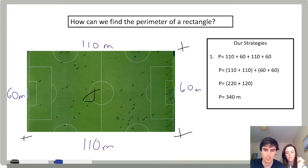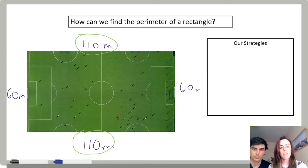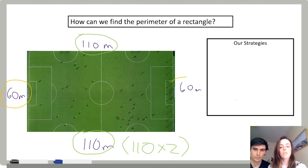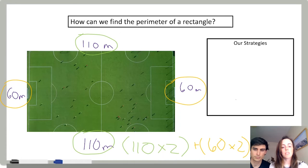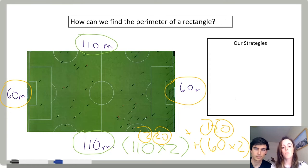My partner Lee had a different strategy, so she's going to share that — maybe you have a totally different strategy too. Looking at the field, the two long sides are the same length, so I would do 110 times two. The two shorter sides are each 60 meters, so I'd add 60 times two. 110 times 2 is 220, plus 60 times 2 is 120. Taking the two 20s gives 40, and the 1 and 2 give 3, so the perimeter is 340.